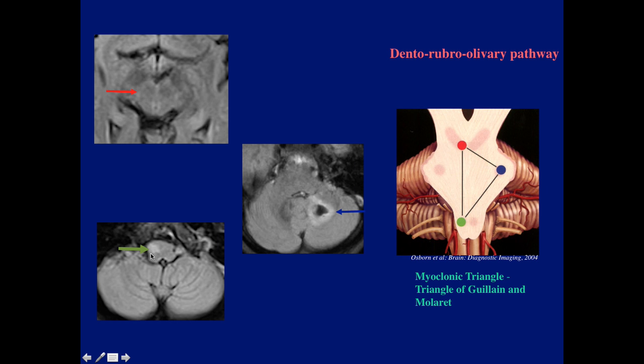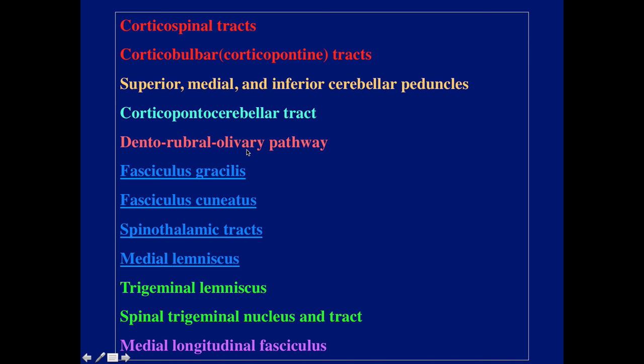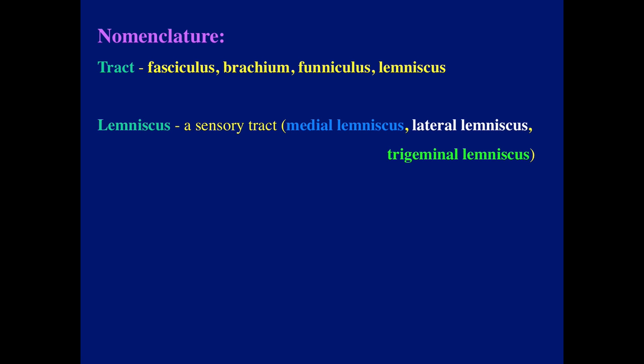We've covered the dentato-rubro-olivary pathway. Now let's move on to four important structures: the fasciculus gracilis, cuneatus, the spinothalamic tract, and the medial lemniscus. Just to review, lemniscus is a sensory tract — we're going to talk about the medial lemniscus today. The lateral is for hearing, and the trigeminal I'll talk about next time.